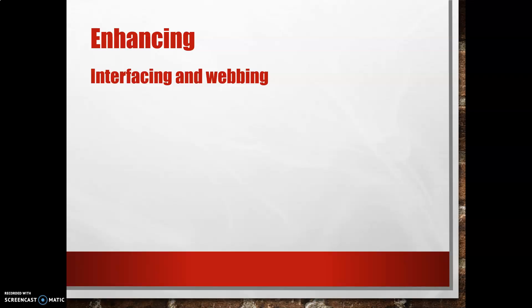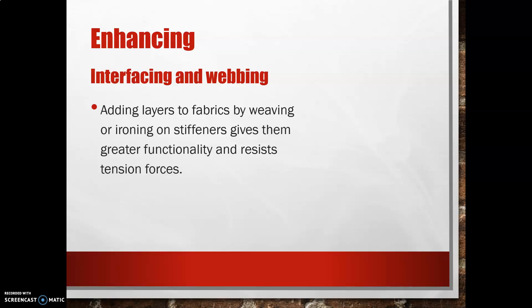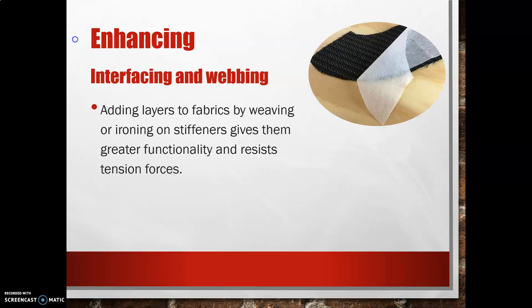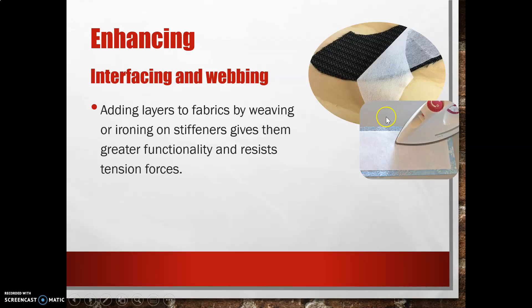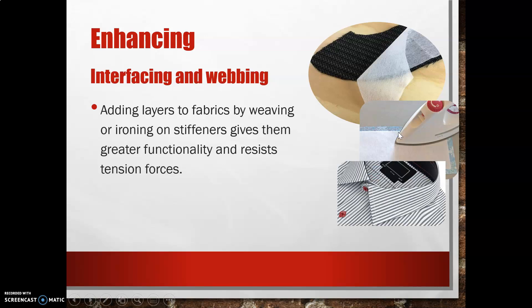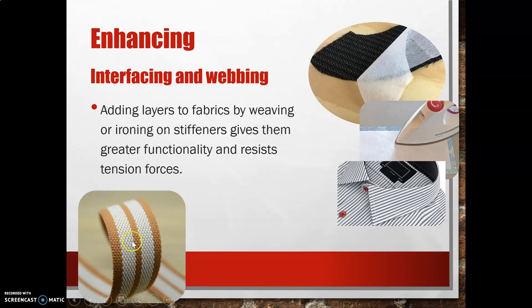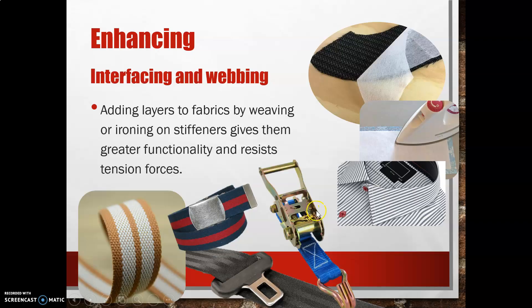Some of the best ways for reinforcing fabrics are interfacing and webbing. We can add layers to fabrics by weaving them together, or iron on stiffeners to give them greater functionality to resist tensional forces. Iron-on interfacing has little glue dots on one side — we iron it on, and it's used universally for things like shirt collars. If you wear a school shirt to school, you are utilising interfacing. Webbing is woven together many times, giving much greater strength and rigidity for things like belts, seat belts, and strapping.